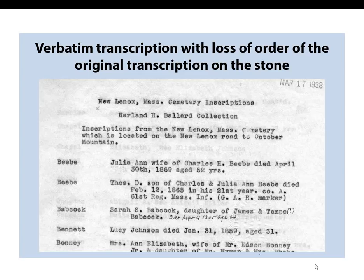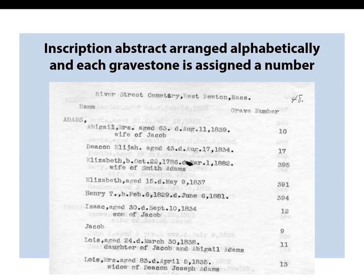Here's a verbatim transcription where the order of the original transcription on the stone is lost. The person adds all the detail but we don't know how it is arranged on the stone. If the stone were destroyed by flood or vandalism, you couldn't resurrect it line by line. For example: Julia Ann, wife of Charles H. Beebe, died April 30th, 1869, age 52 years — obviously that was not all on one line; it was broken up. The detail is there but the loss should be indicated by line breaks. The next type is inscriptions abstracted and arranged alphabetically with each gravestone assigned a number — the genealogist alphabetized all the families. Here's a listing of the Adams family at the River Street Cemetery in West Newton from NEHGS records. Is that number related to a map, or to the master original list as they walked the cemetery?